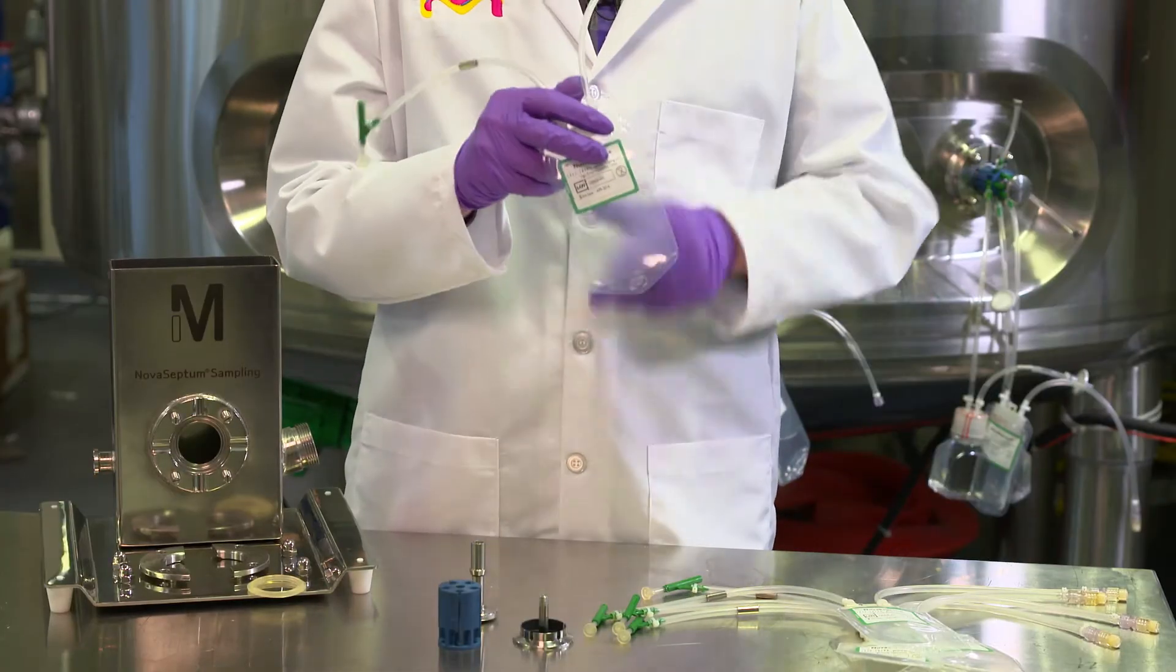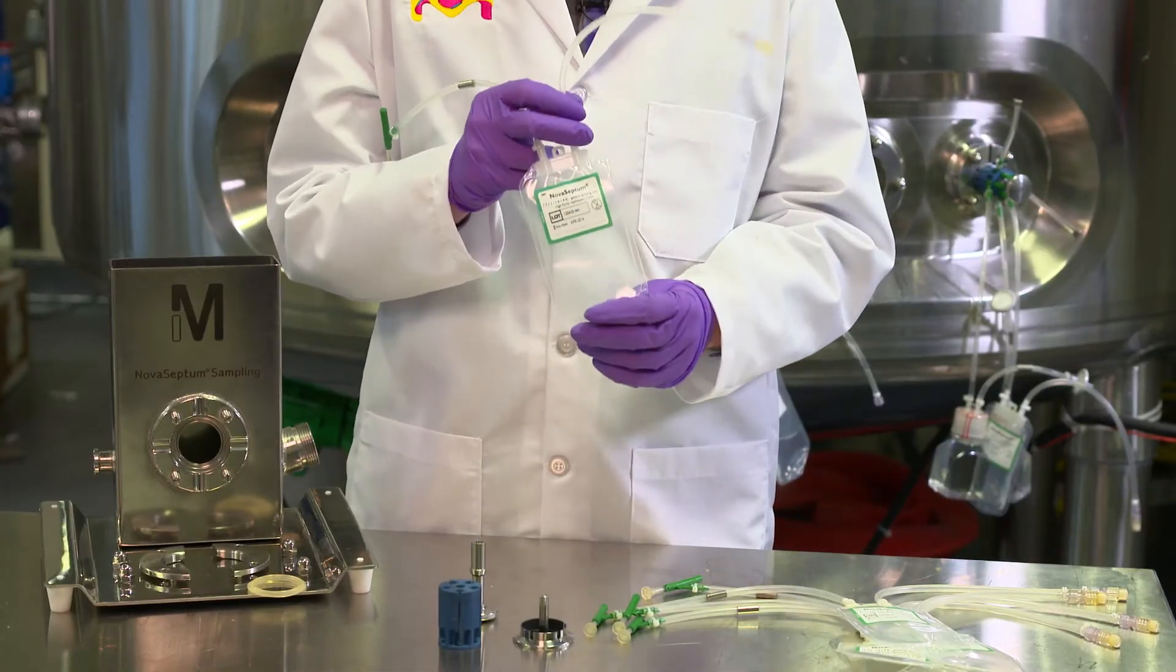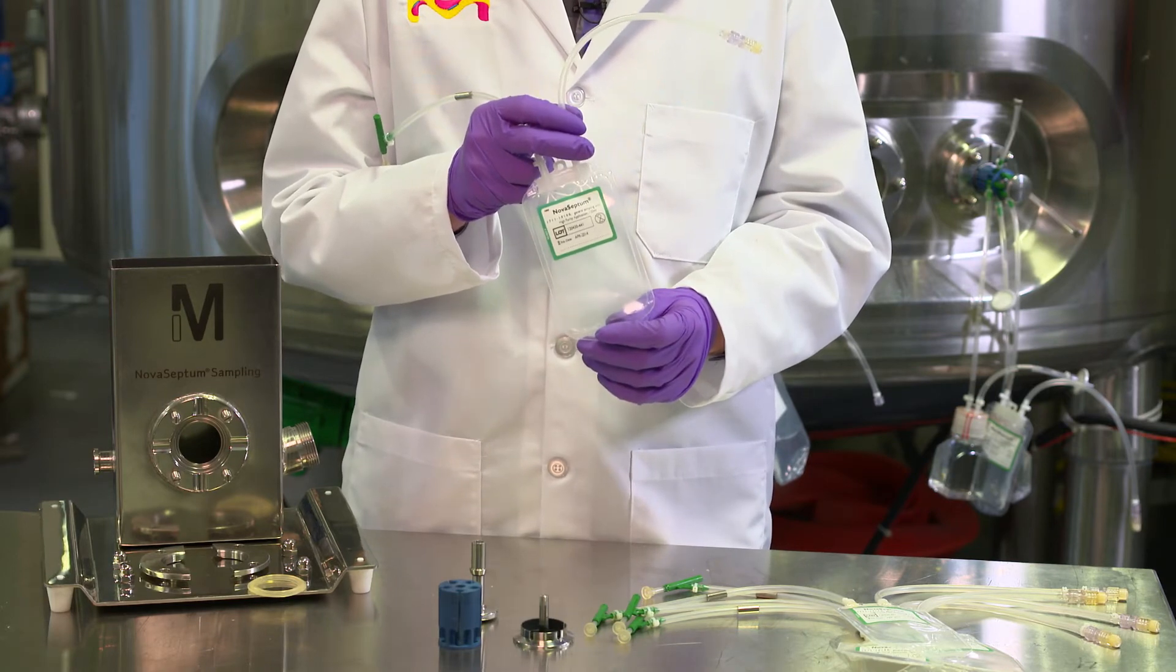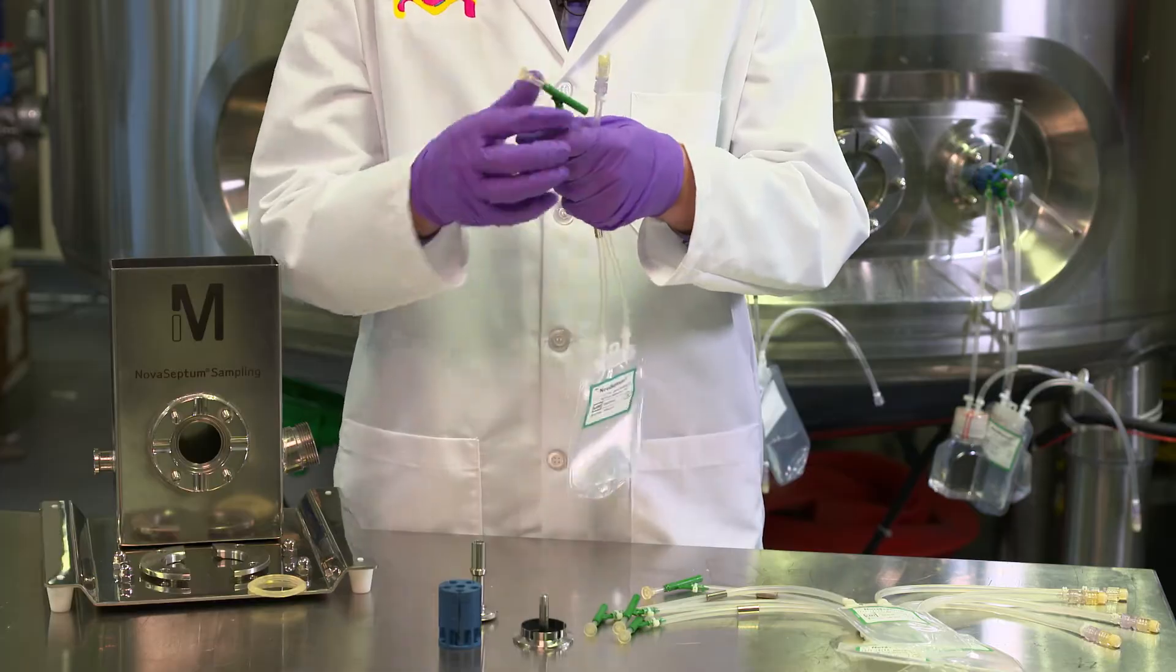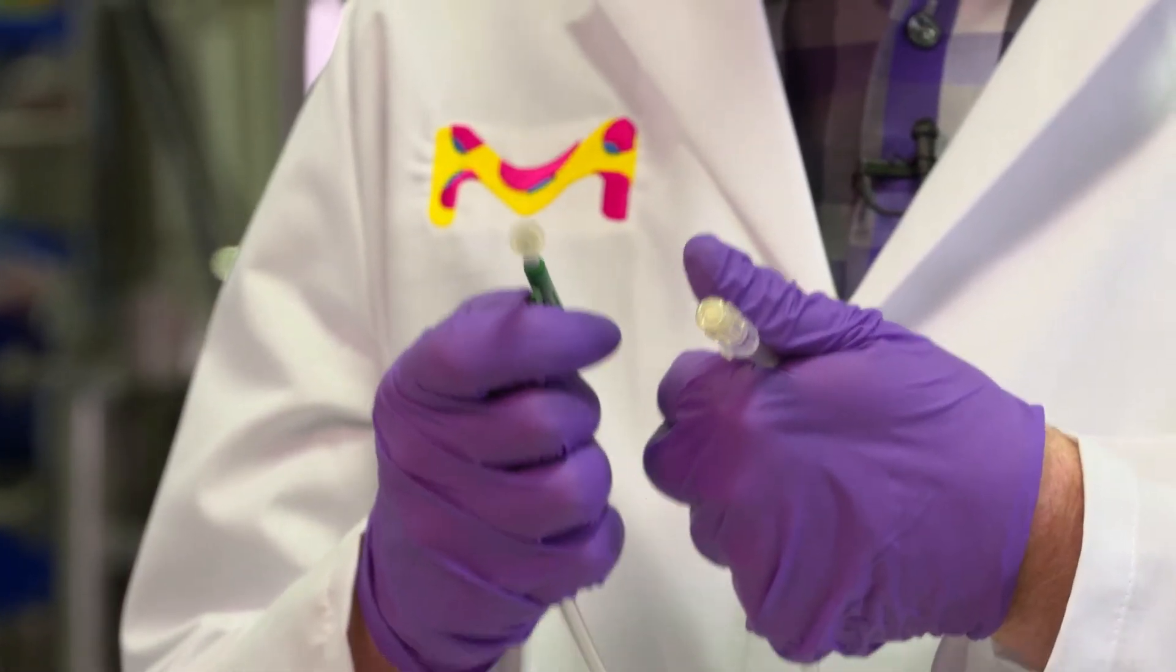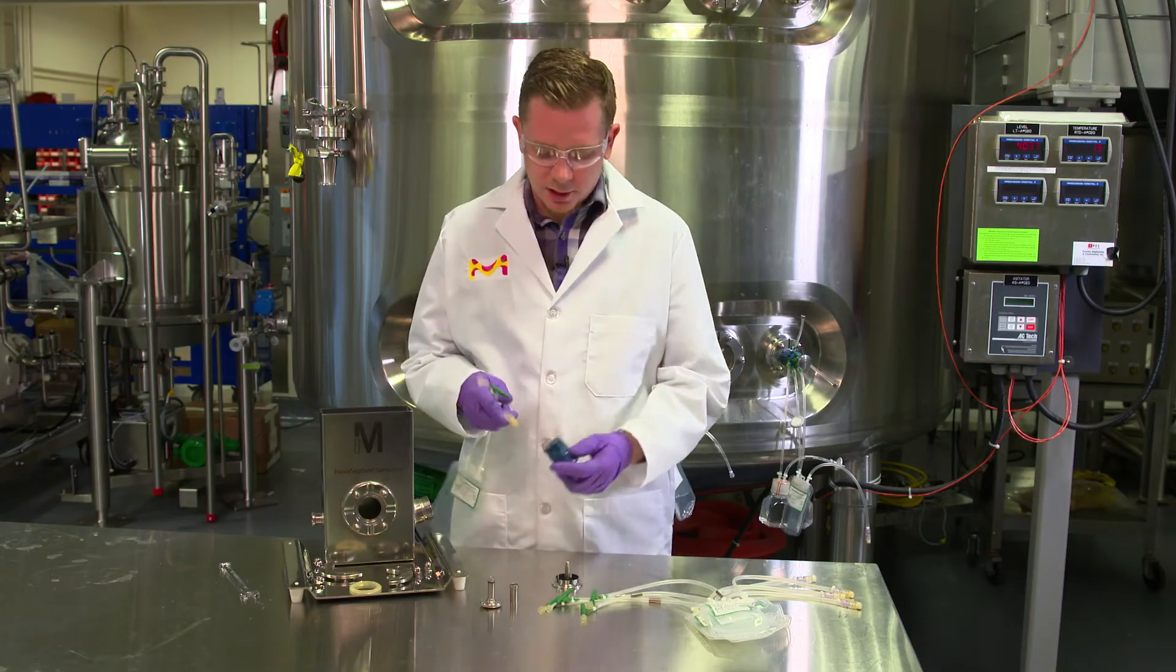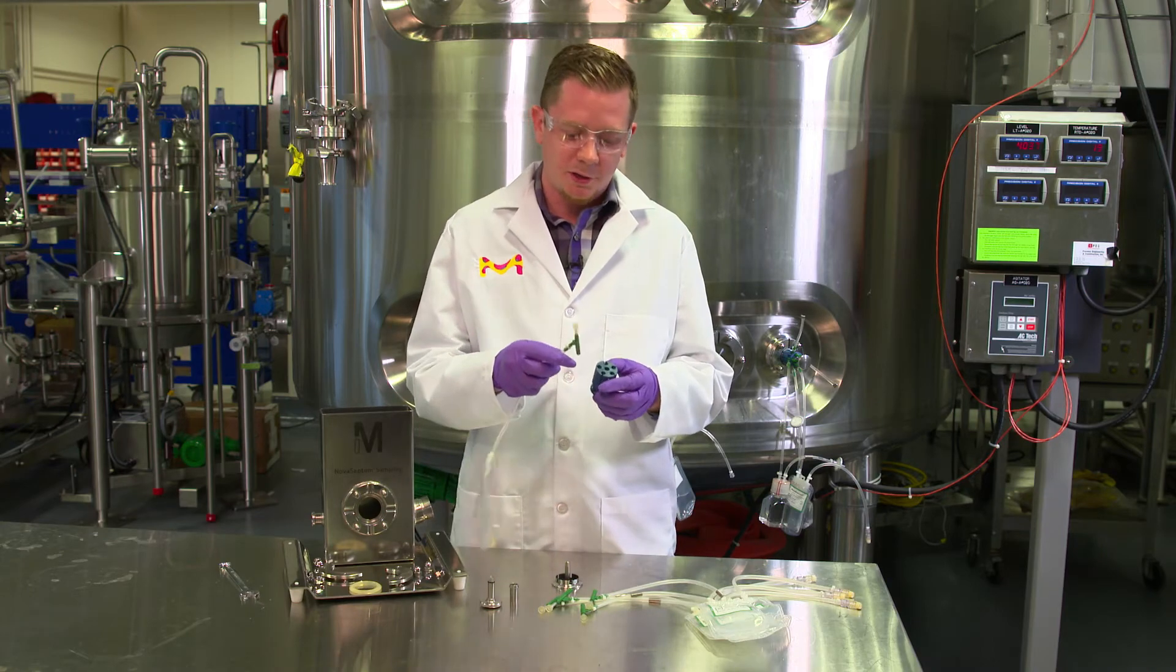The next step is to take our container, which is a closed, sterile container. It's sterile from being gamma irradiated, and it's closed on each end so that we maintain sterility. Each of the containers gets loaded up into the holder like so.